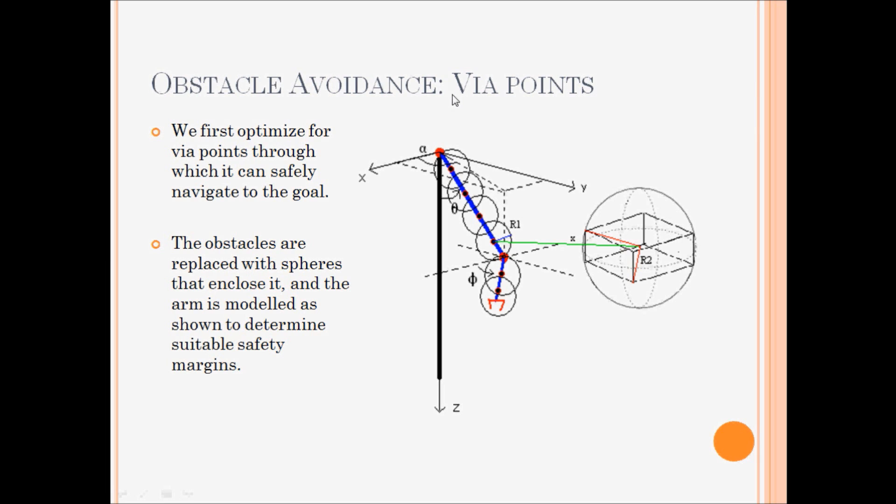So we tackle the problem in two stages. First, we search for waypoints. These are points in between the initial state and the final state through which the arm can go by successfully negotiating the obstacle.